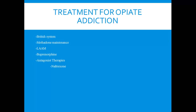Buprenorphine is a mixed agonist-antagonist. It binds more strongly to the mu opiate receptor and is able to outcompete morphine for those binding sites, but it produces some effects of its own. The risk is when individuals grind it up and inject it rather than taking it orally, which increases the abuse potential. So buprenorphine is often mixed with naloxone — if the individual crushes the buprenorphine and tries to inject it, the naloxone would be able to block the binding sites.